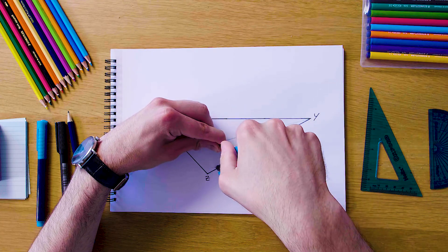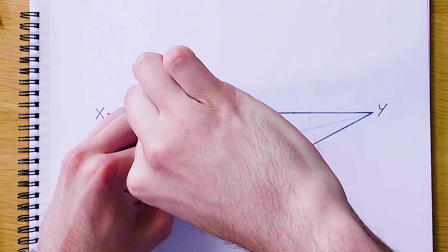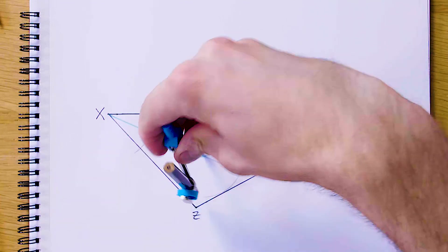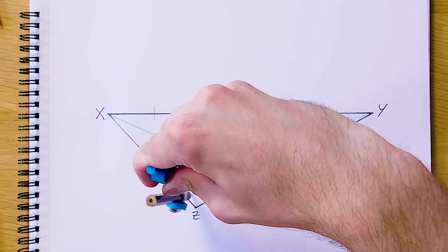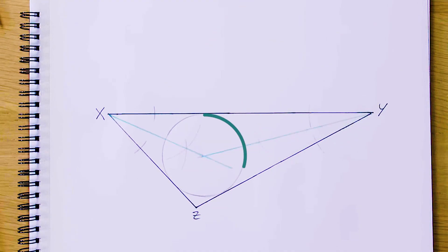So we're going to swing around so that it touches each side like this. And this is our incircle.